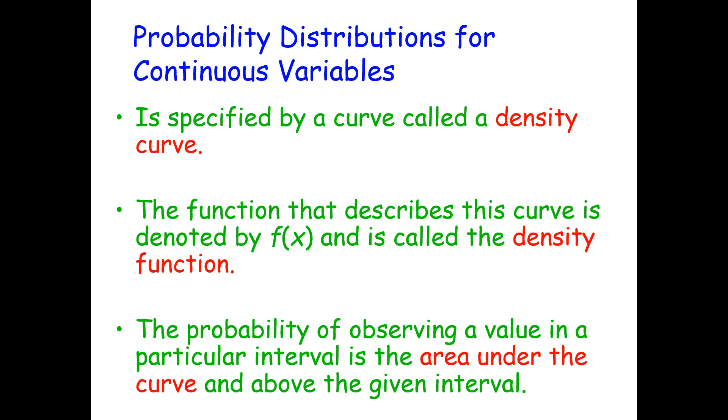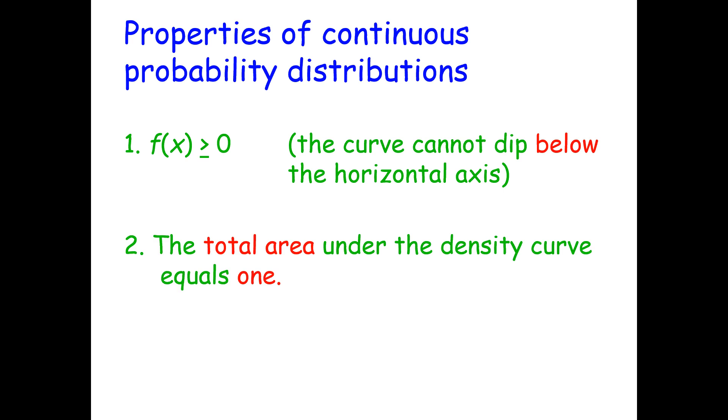Let's talk about some of the properties of continuous probability distributions. First, the curve cannot dip below the horizontal axis. So our f(x) is going to need to be greater or equal to 0. And the total area under the density curve equals 1.